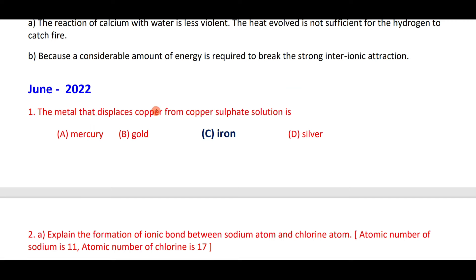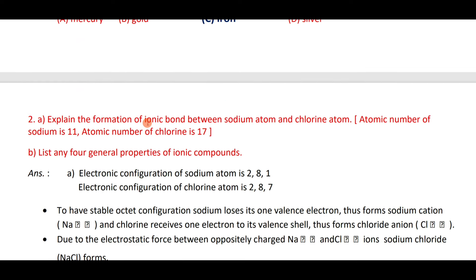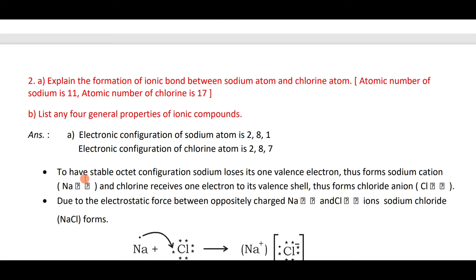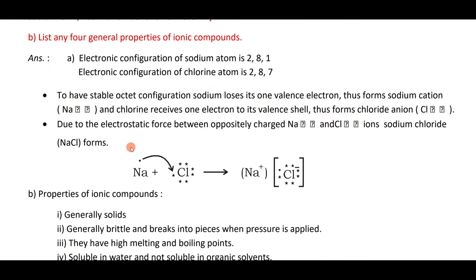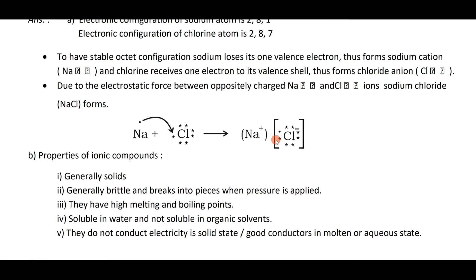The metal that displaces copper from copper sulfate solution is iron, because iron is more reactive than copper. Formation of ionic bond between sodium and chlorine: sodium's electronic configuration is 2,8,1 and chlorine's is 2,8,7. Sodium donates one electron to chlorine — sodium is the donor, chlorine is the acceptor. Due to electrostatic force between Na⁺ and Cl⁻ ions, sodium chloride is formed.